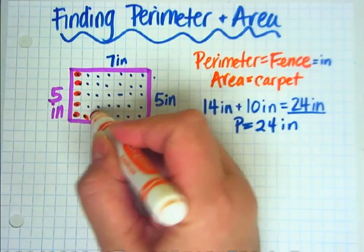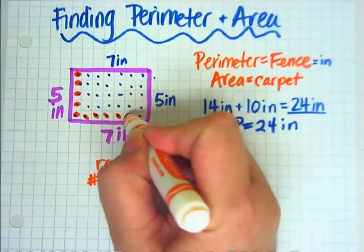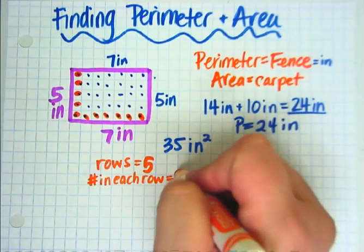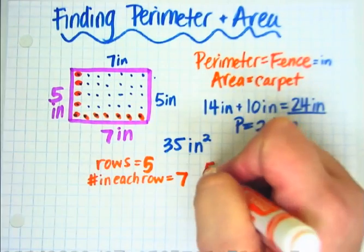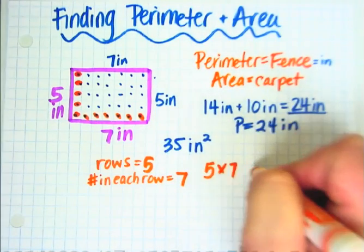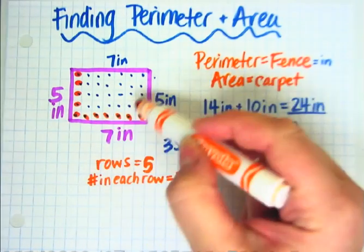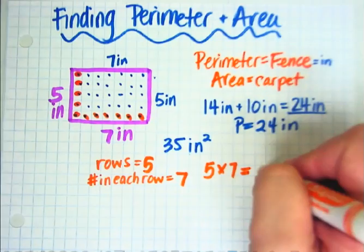And the number in each row? 1, 2, 3, 4, 5, 6, 7. And all we do is multiply 5 times 7, and that will tell you the entire number of squares in there.